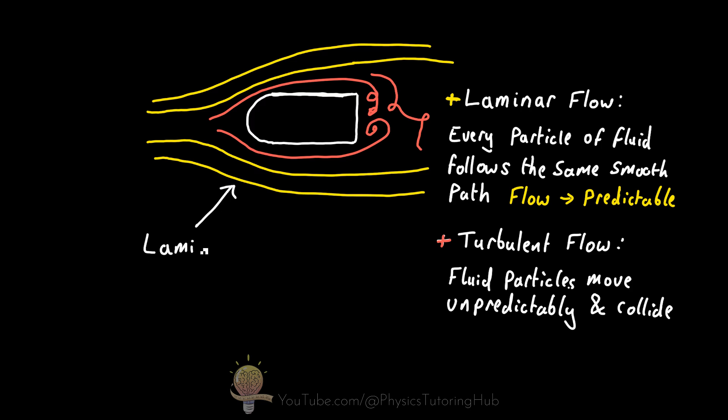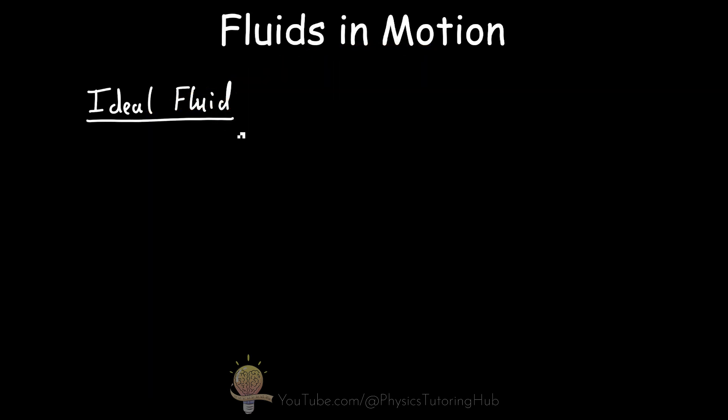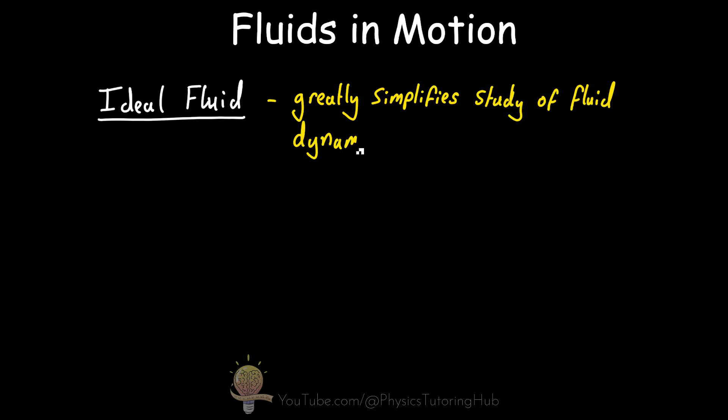Laminar flow is much easier to model due to its predictable motion, while turbulent flow is extremely chaotic and unpredictable. Now we're going to introduce the ideal fluid model, which greatly simplifies our study of fluid dynamics without needing to consider complexities such as heat conduction, drag, viscosity, and so on.